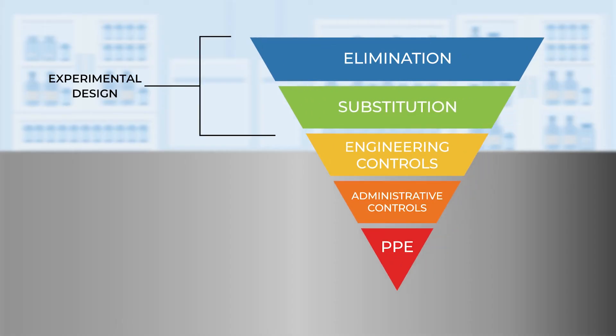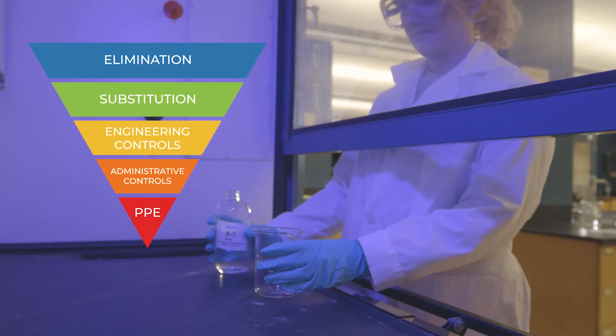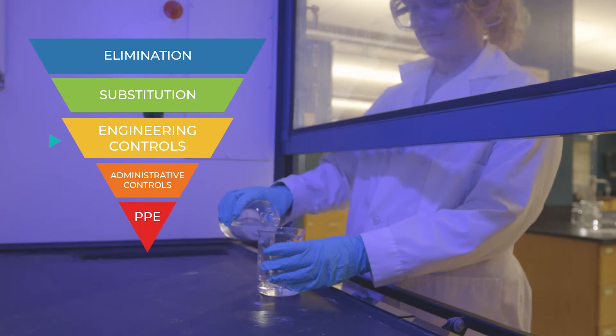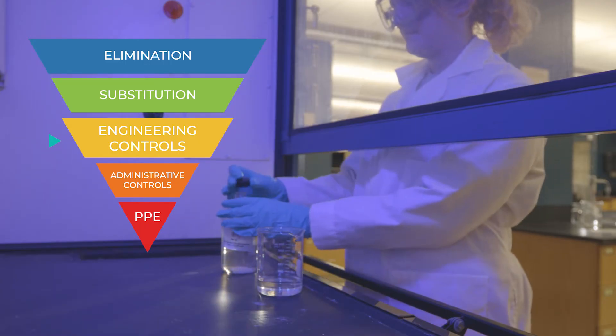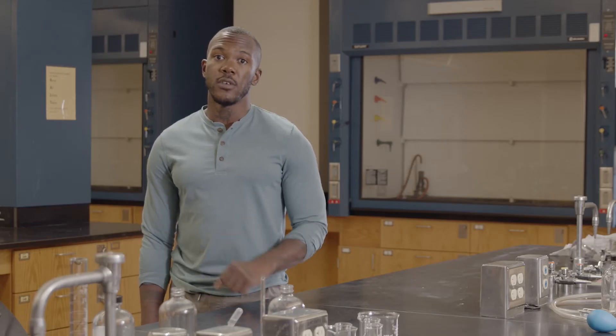Options 1 and 2 at the top of the pyramid have more to do with designing experiments, and your instructors have probably considered these already. So let's focus on the lower three options, which are steps you can take while in the lab to minimize exposure. Strategies that reduce the likelihood of exposure also reduce the risk. In the lab, engineering controls usually refers to using a fume hood. The main purpose of a hood is to remove gases and vapors, which lowers the chance of inhalation as well as fire or explosions.